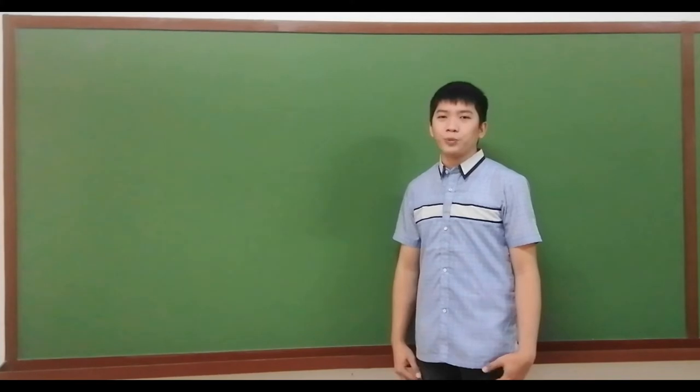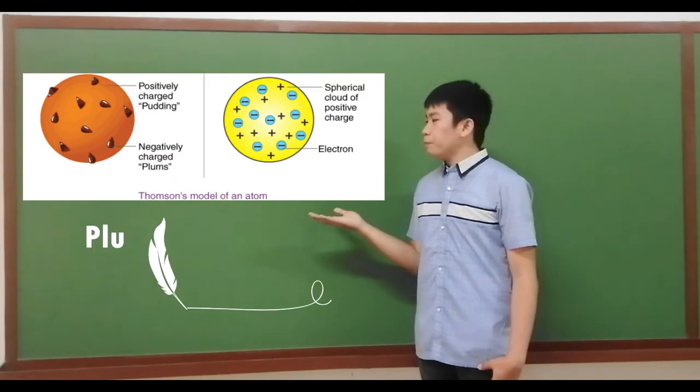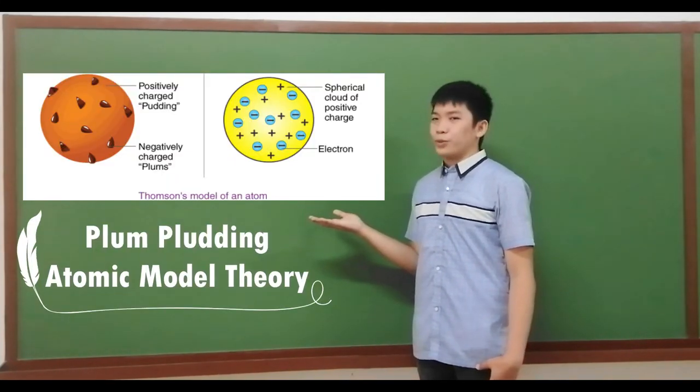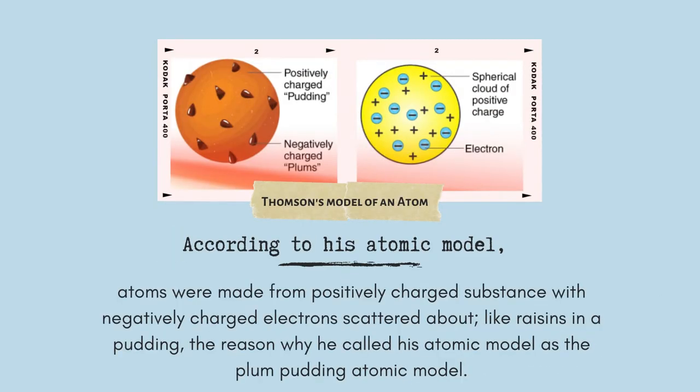J.J. Thompson proposed the Plum Pudding atomic model theory. According to his atomic model, atoms were made from positively charged substance with negatively charged electrons scattered about, like raisins in a pudding, the reason why he called his atomic model as the plum pudding atomic model.